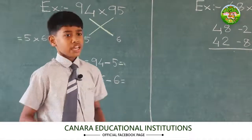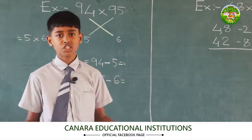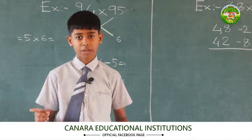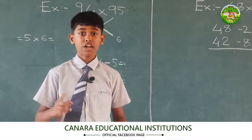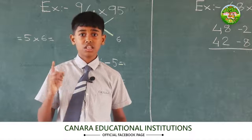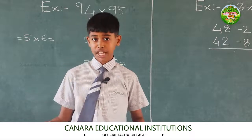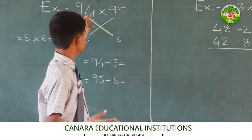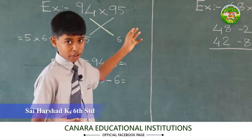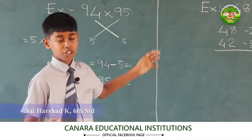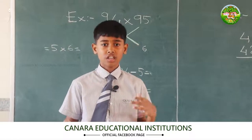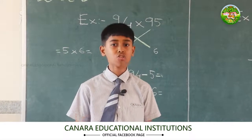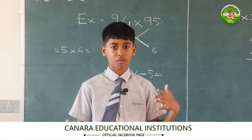This Sutra is used when both the multiplier and the multiplicand are near to the base, which is in the power of 10. For example, we take two numbers 94 and 95, which are both nearest to the base 100, which also comes in the power of 10.